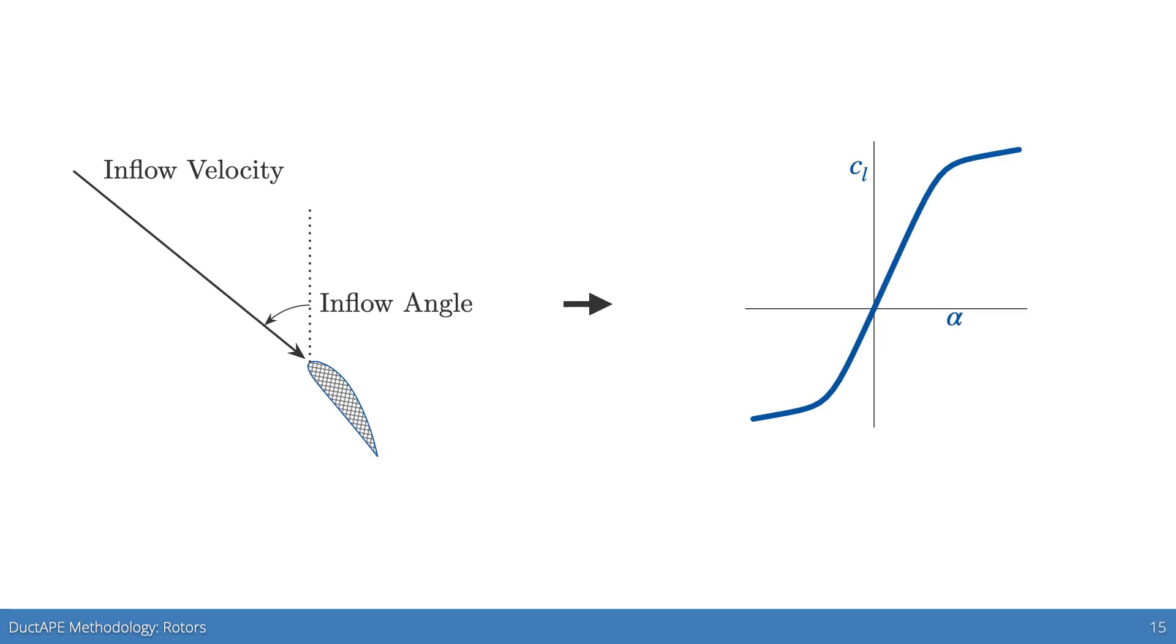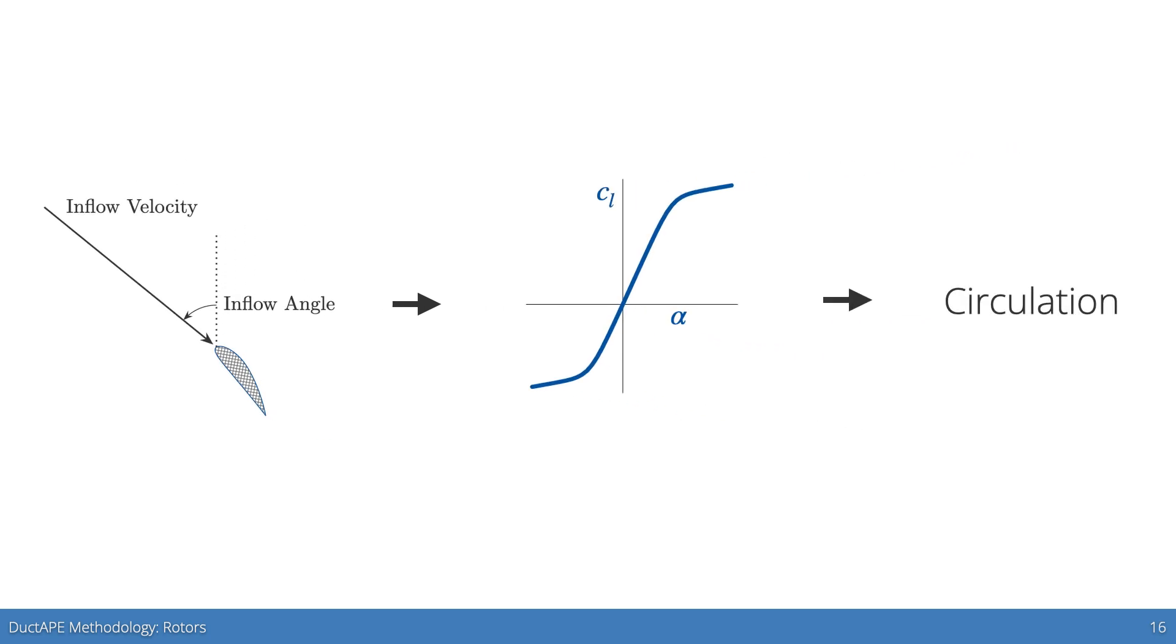With the inflow velocity and angle, we look up the lift from a predetermined airfoil or cascade polar for each blade element. From the lift, we use the Kutta-Joukowski theorem to obtain the local circulation, which is passed into the wake model.